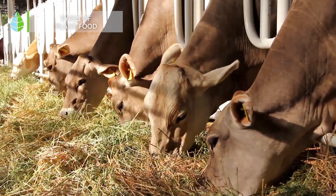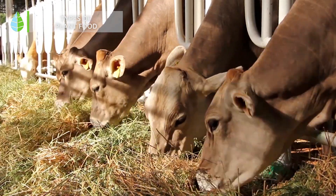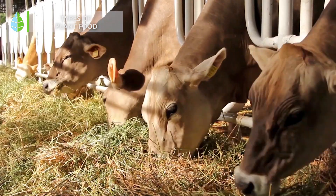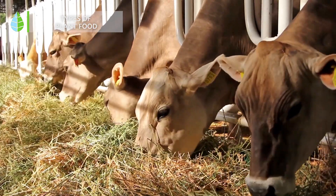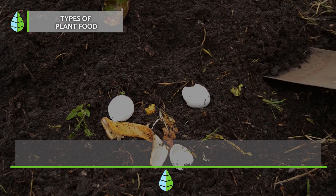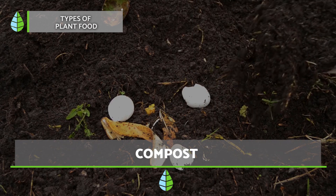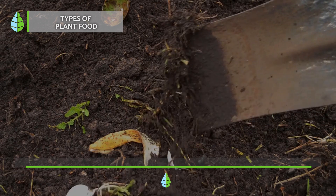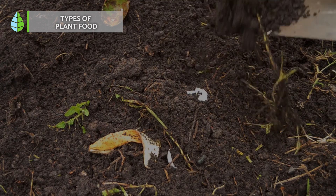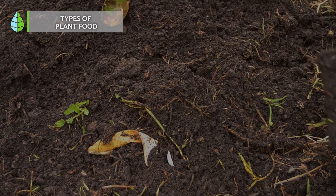Manure originates from the excrement of animals such as cows, horses, sheep or virtually any other type of livestock. Compost is a very popular type of plant food that many people use at home.